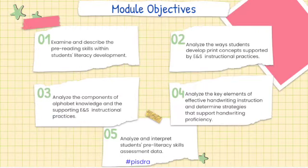The objectives for this module are to examine and analyze pre-reading skills and how students develop concepts of print, alphabet knowledge, and handwriting, and how we can support them with explicit and systematic instruction. Towards the end of the module, we will also take a dive into student data and how to use that data to plan for instruction.